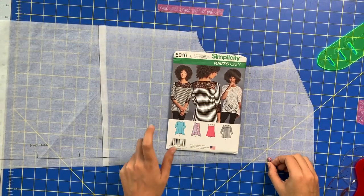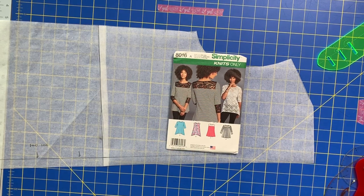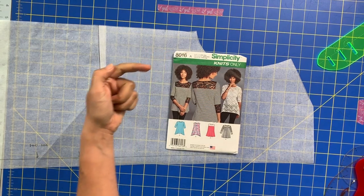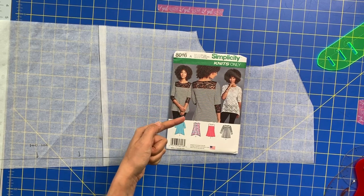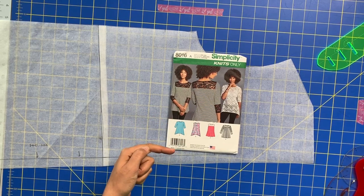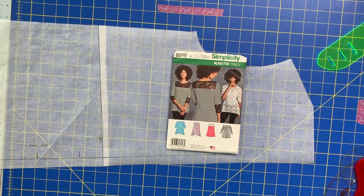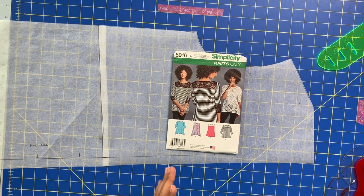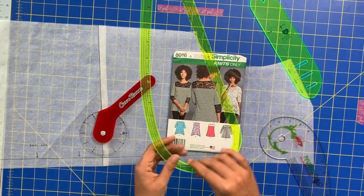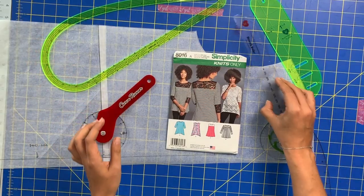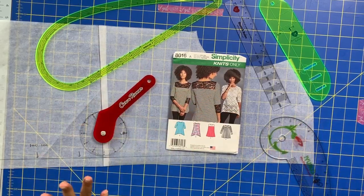We are starting with this basic knit t-shirt tank top, Simplicity 8016, that I am going to lengthen into a dress, scoop out the neckline, and add a henley for a really fun casual shirt dress situation. I'm going to do all of these alterations with all of the wonderful products provided to us from Stitch Buzz. So we're going to be using all of these things today, which might seem like overkill. Let's get into it.